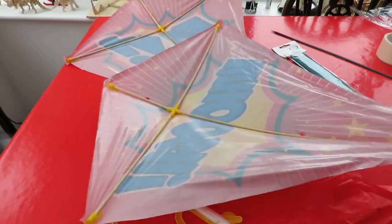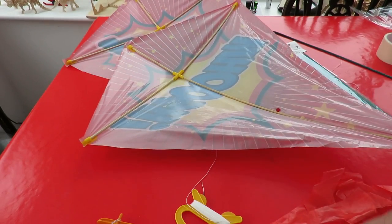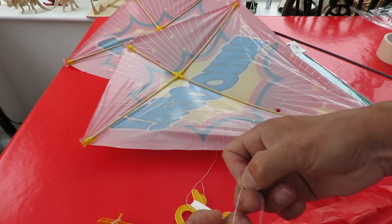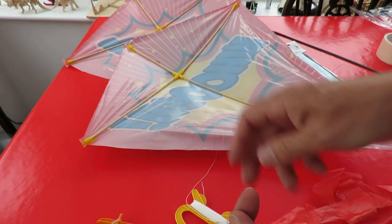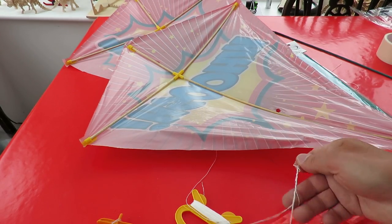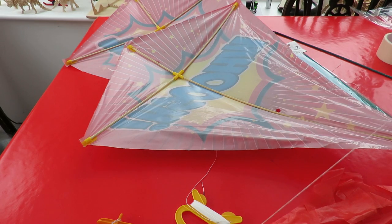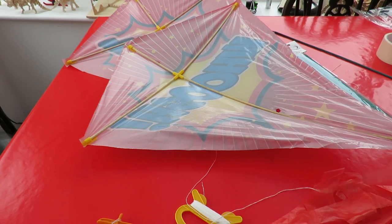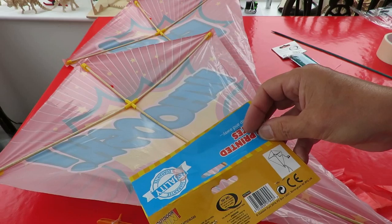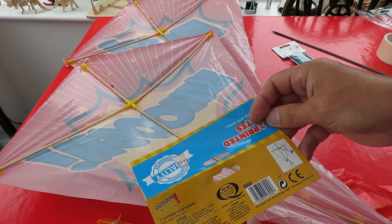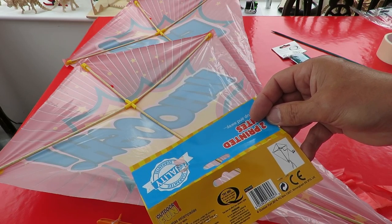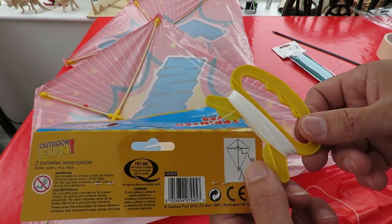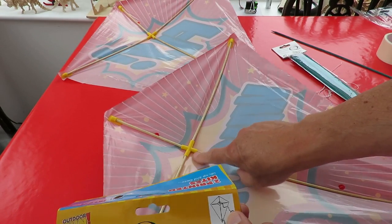So next thing we'll do is actually tie the bridle. This is what they've given us to tie the bridle with, which looks to me like two bits of cotton or line. Yeah, two bits of line with no guidance on how to tie it. In fact, if you look at the picture, it appears you tie this directly onto there and that ain't right.